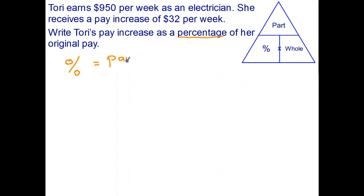Percent is part over whole. Now the part is the increase. The original amount or the whole amount is $950. Let's go ahead and divide $32, divide $950. That'll give me the decimal.